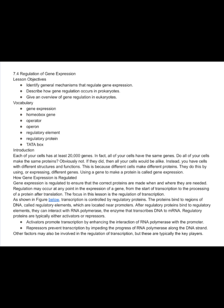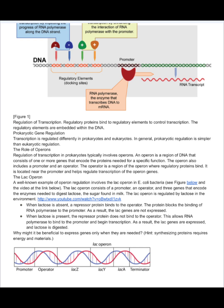Regulatory proteins are typically either activators or repressors. Activators promote transcription by enhancing the interaction of RNA polymerase with the promoter. Repressors prevent transcription by impeding the progress of RNA polymerase along the DNA strand. Other factors may also be involved in the regulation of transcription, but these are typically the key players. Regulatory proteins bind to regulatory elements to control transcription, and the regulatory elements are embedded within the DNA.